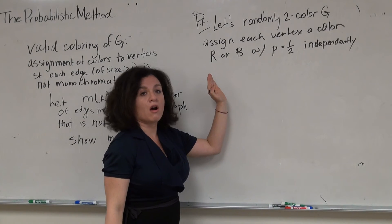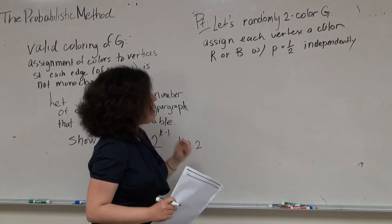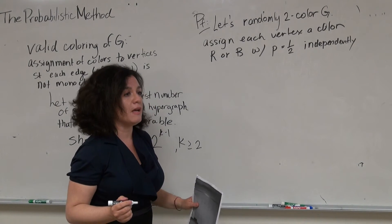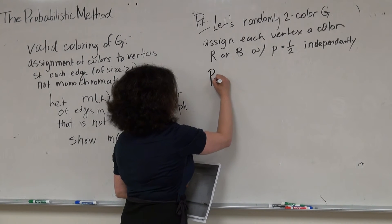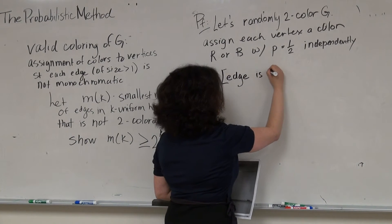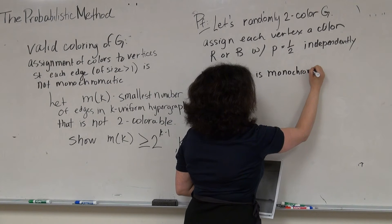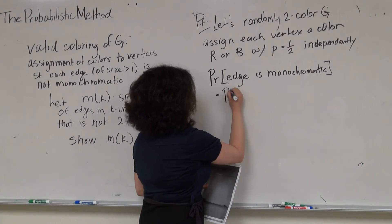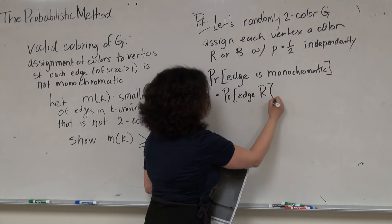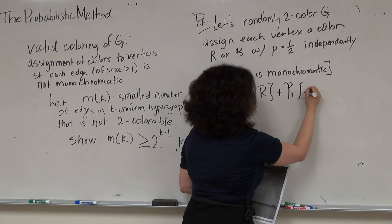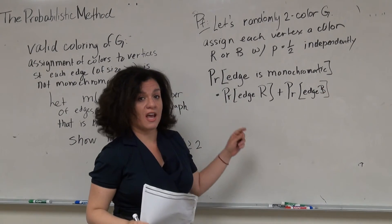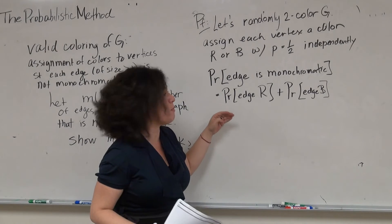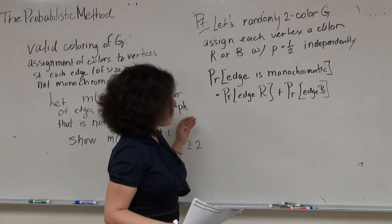This is how we generate our sample space — the random colorings of the hypergraph. Now we want to consider what is the probability that the coloring is monochromatic. First: what's the probability that a single edge is monochromatic? There are two ways for an edge to be monochromatic: the edge can be all red or it can be all blue. An edge can't be both all red and all blue, so that intersection has probability zero. We apply the union bound: the probability of A or B equals the probability of A plus the probability of B.